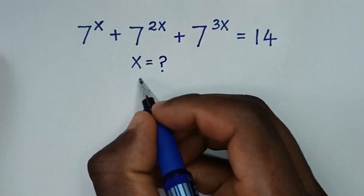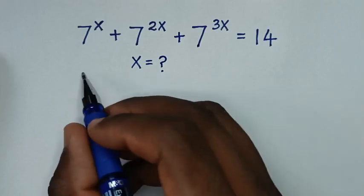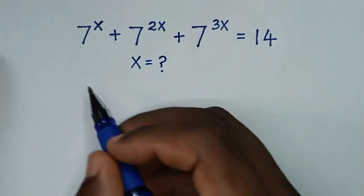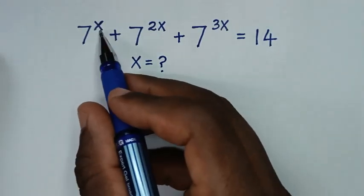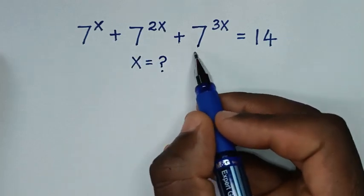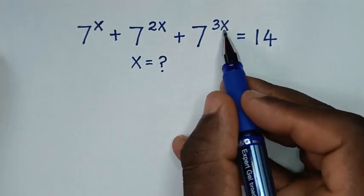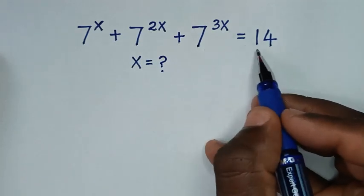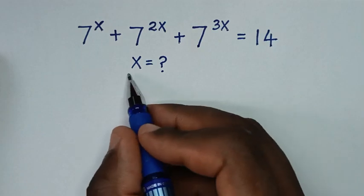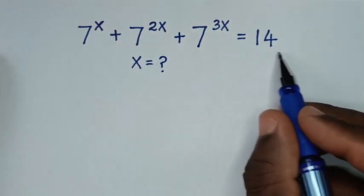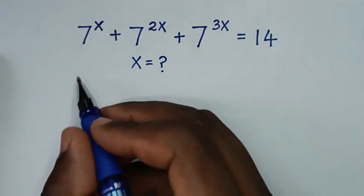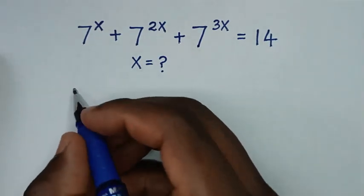Hello, you are welcome to solve this math problem which is 7 power x plus 7 power 2x plus 7 power 3x is equal to 14. We need to find the value of x from this equation.